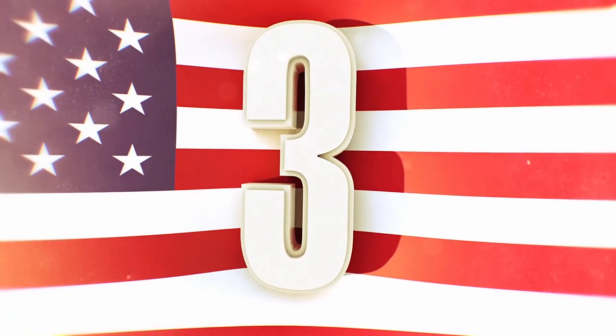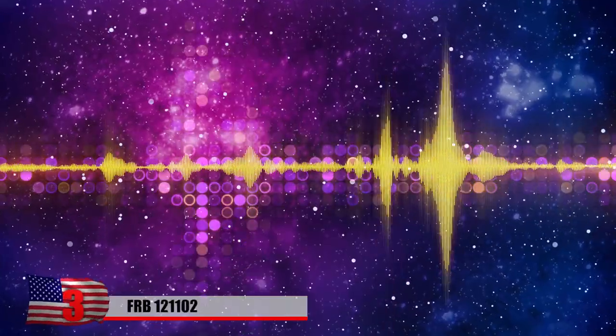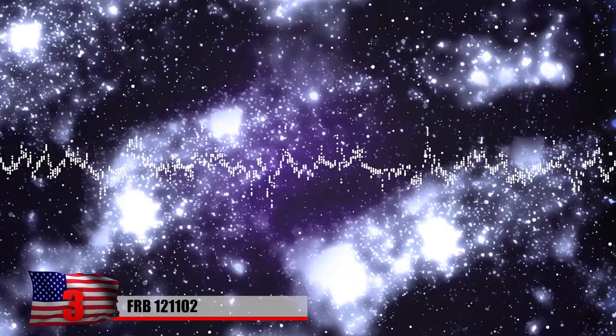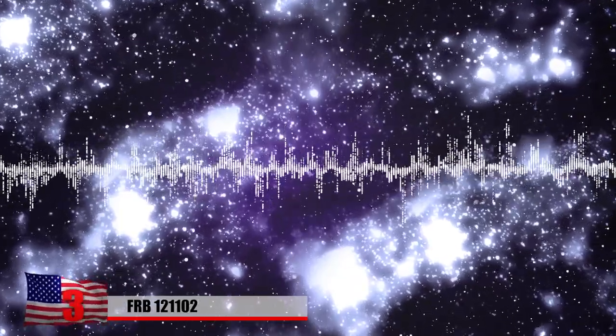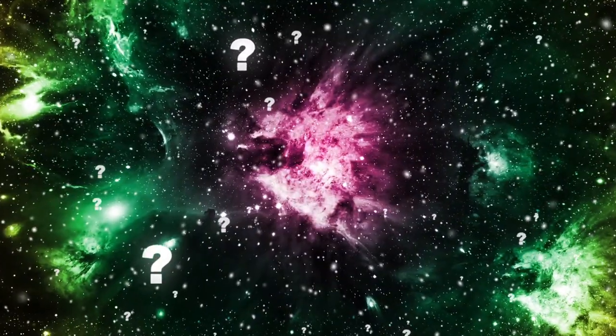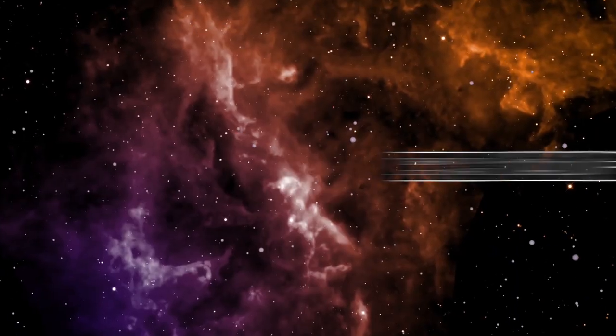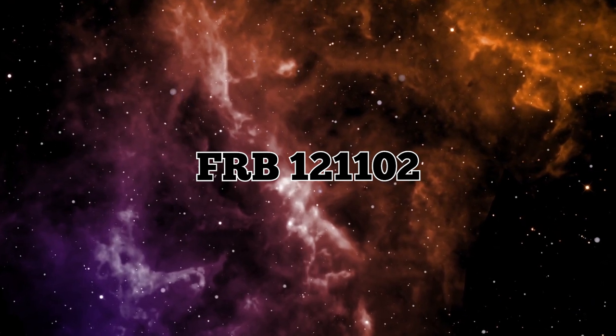Number 3. FRB 121102. Fast radio bursts have been getting more and more popular lately, from the wow signal to the mysterious repeating signal that was sent every 16 days from somewhere deep in space. But there are other creepy signals being sent from outer space that scientists simply can't explain right now. One of them is FRB 121102.